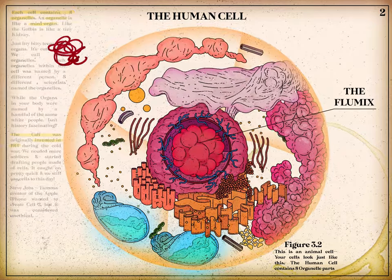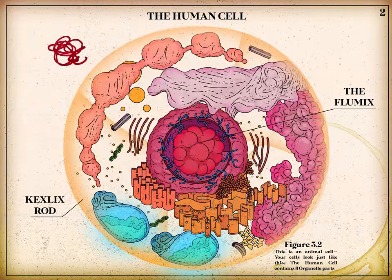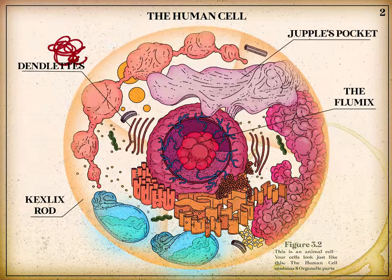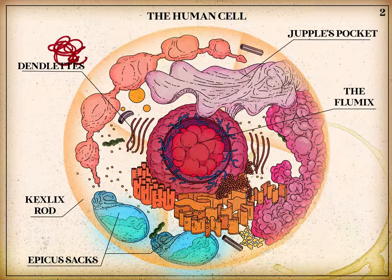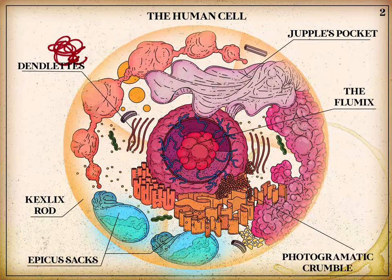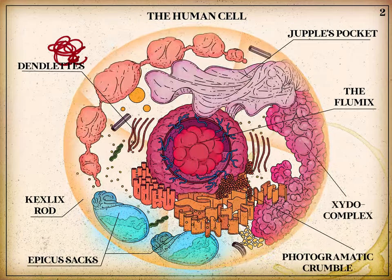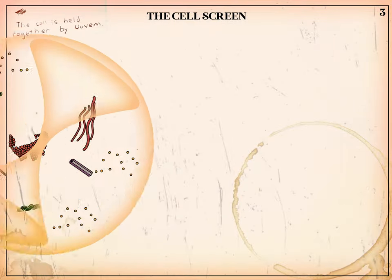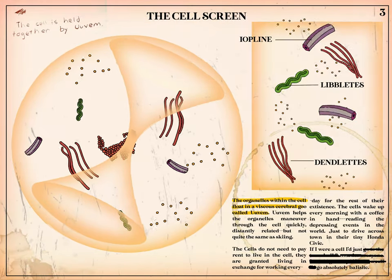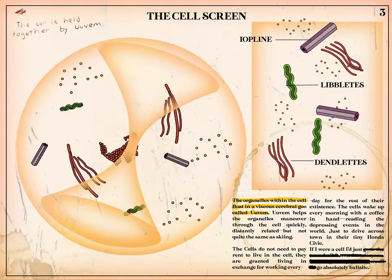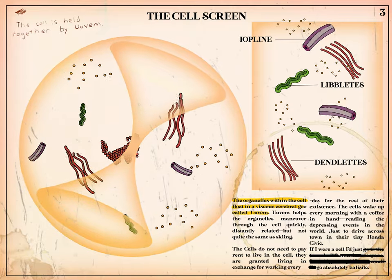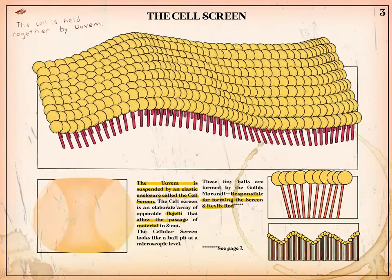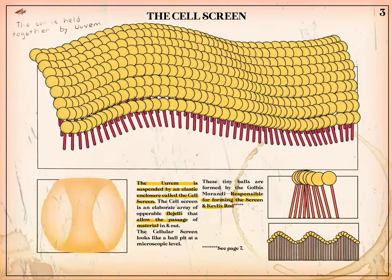The flummox, Kexlich's rod, Dindlitz, Juppel's pocket, the EPCS sacs, photogrammatic crumple, zytocomplex, and the goldus mirandi. The organelles within the cell float in a cerebral goo called ovum, suspended by an elastic membrane called the cell screen.